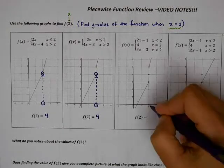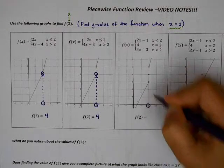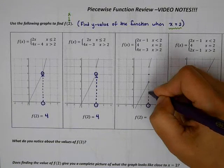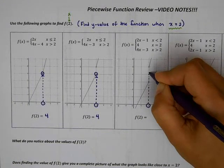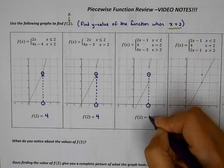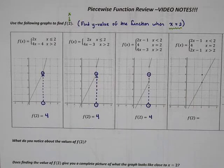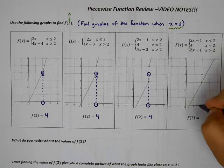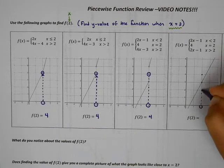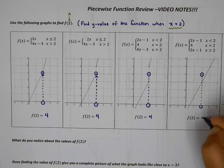For the next graph, if I go to where x is 2, the y value here would be all the way here at 4 as well, because again, that's where the closed circle is. For the next graph, if I go to where x is 2, the y value here would be 4 because that's where the closed circle is.